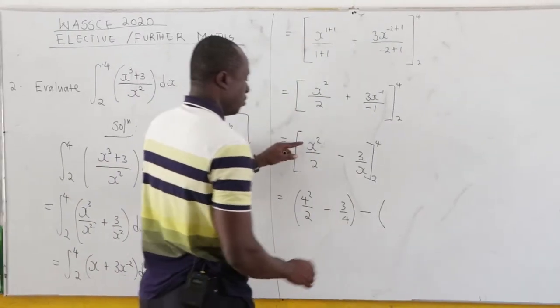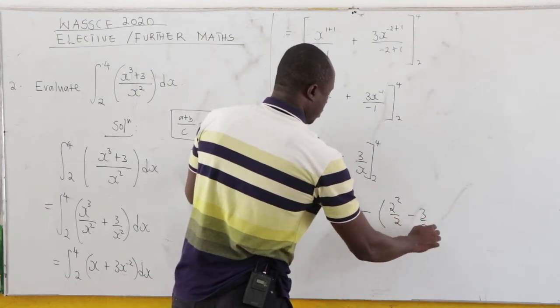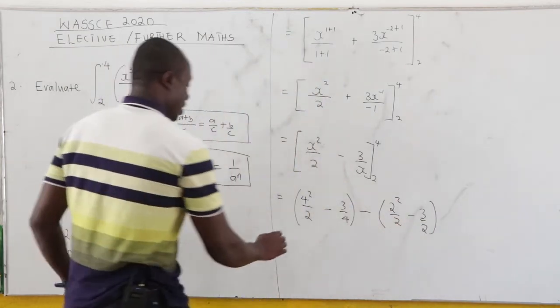Minus, we put 2 inside. So 2 to the power 2 over 2 minus 3 all over 2.